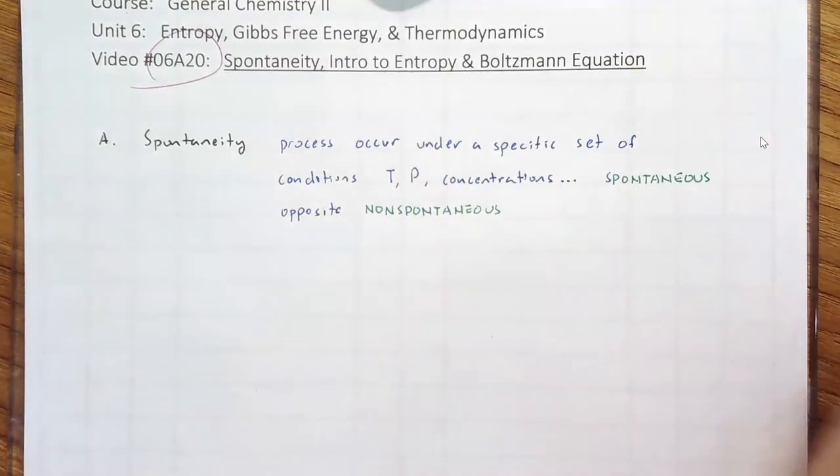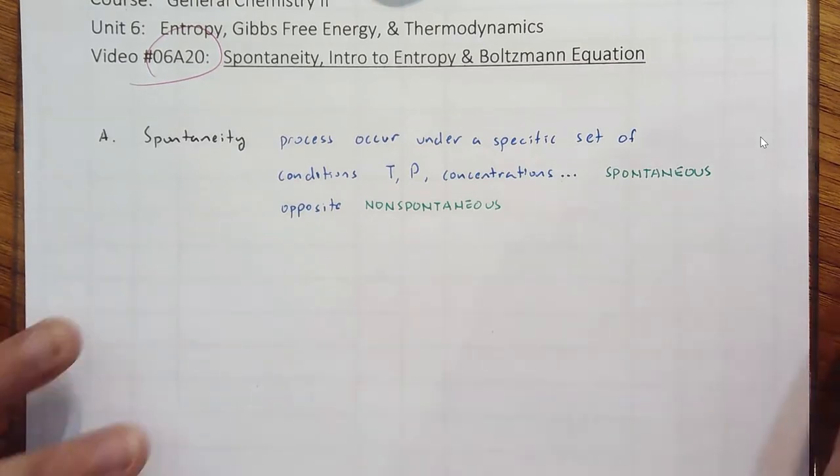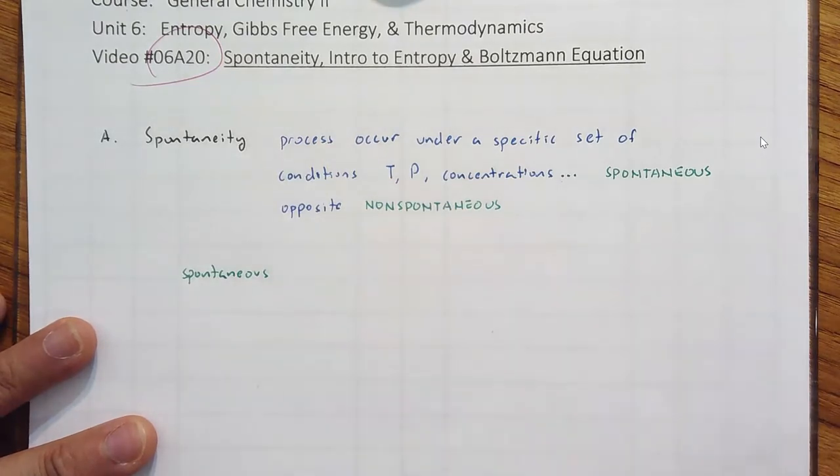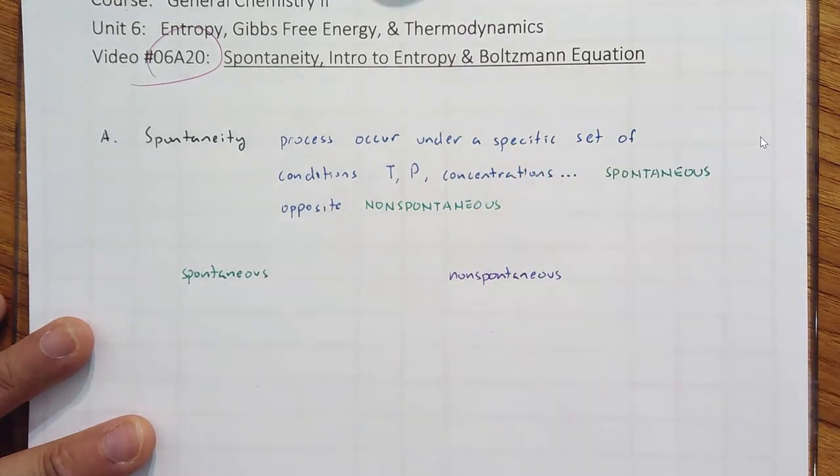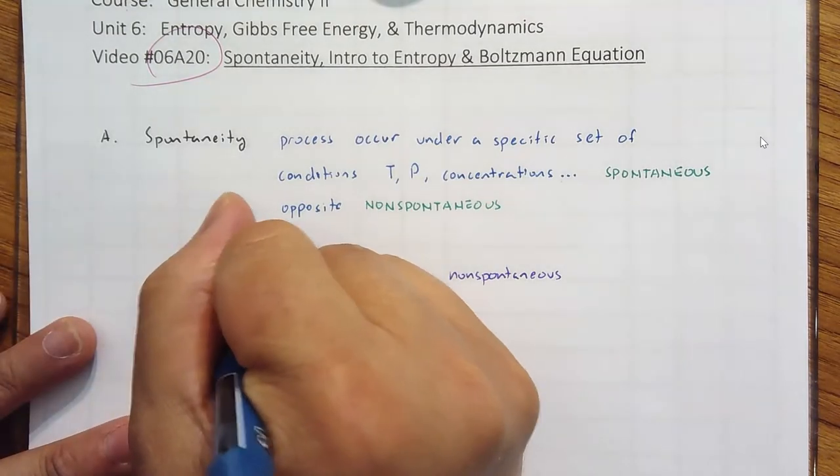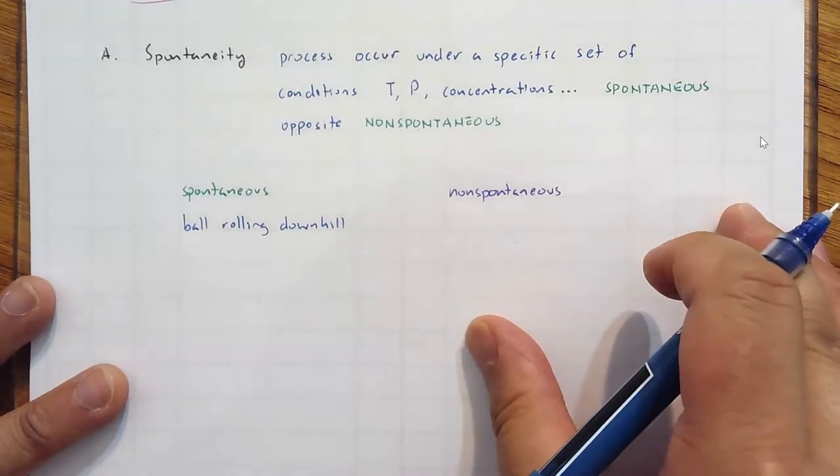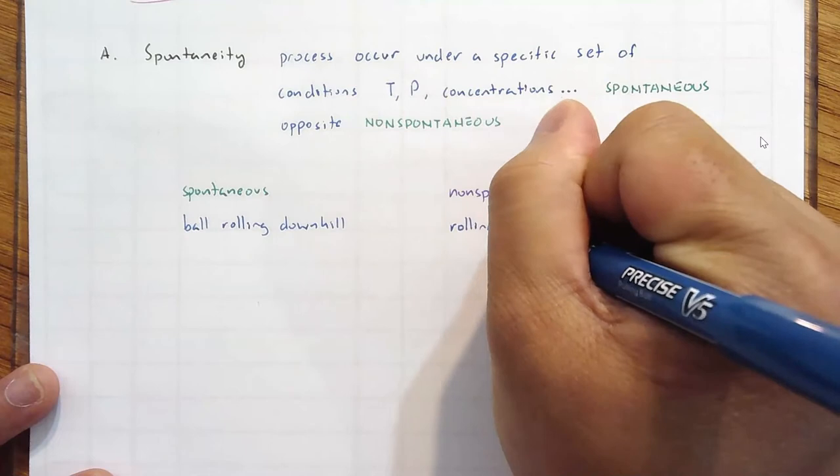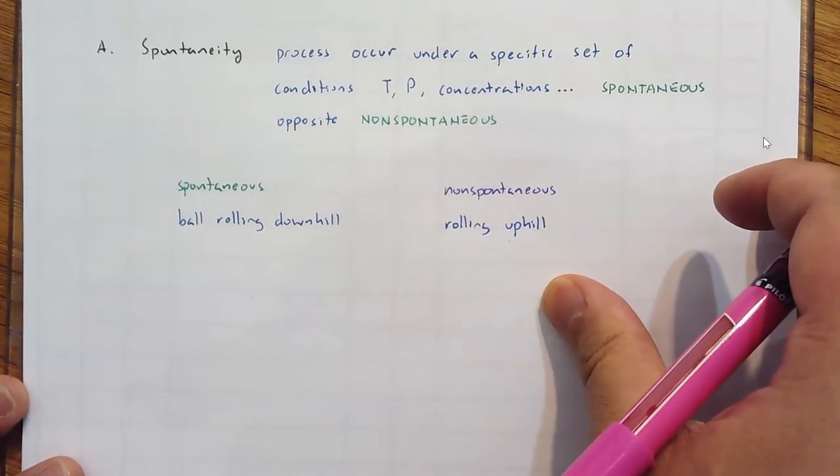Some processes are harder than others to predict spontaneity. Let me give you examples comparing spontaneous versus non-spontaneous. The first one is a ball rolling downhill - that's spontaneous. In contrast, a ball at the bottom rolling uphill is non-spontaneous. To get the ball rolling uphill, we have to have a constant input of energy.